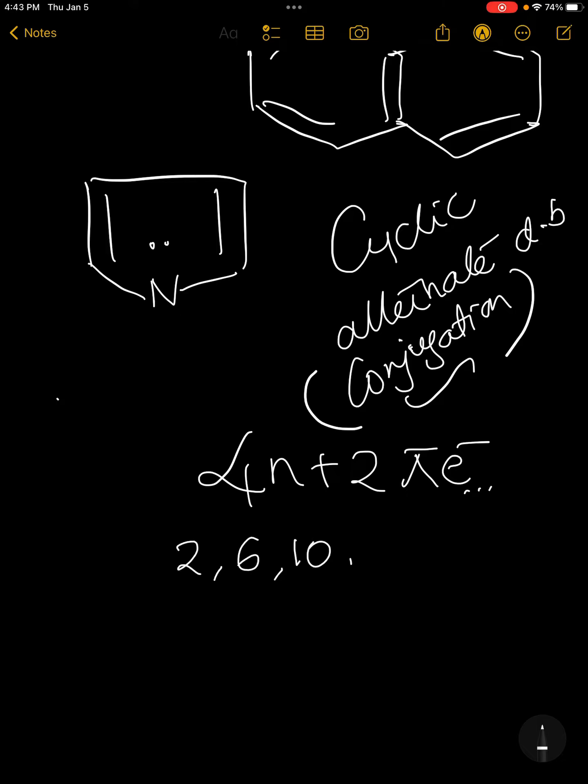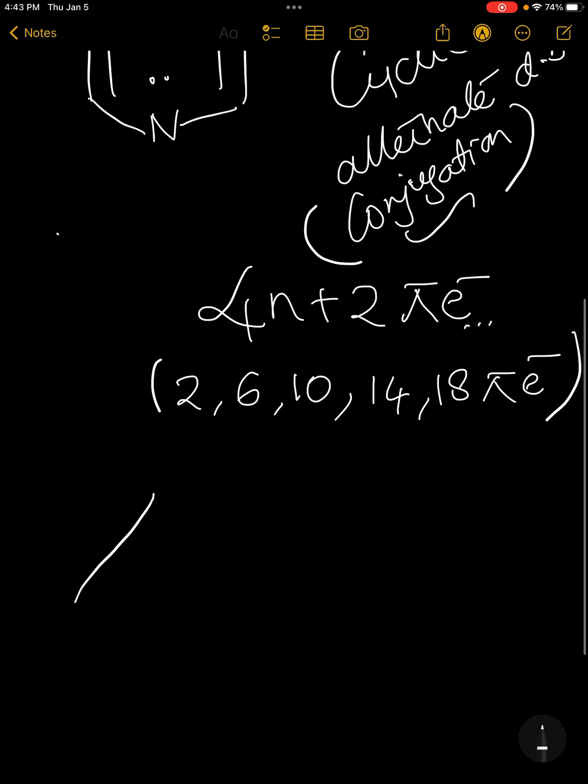So 2, 6, 10, 14, 18 type of pi electrons if it is having, it can be aromatic. The simplest example you can see is this is aromatic, this is aromatic.